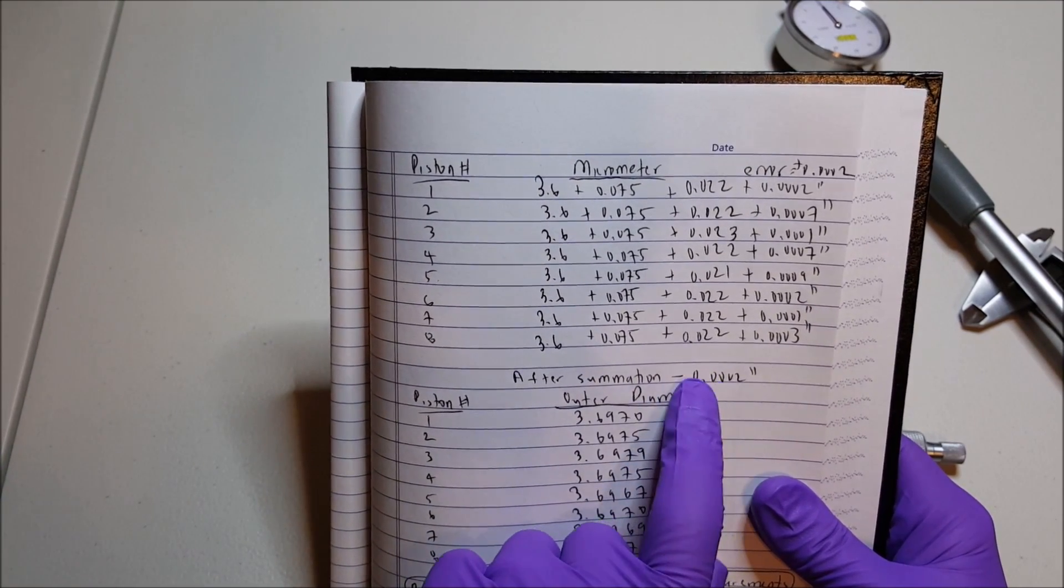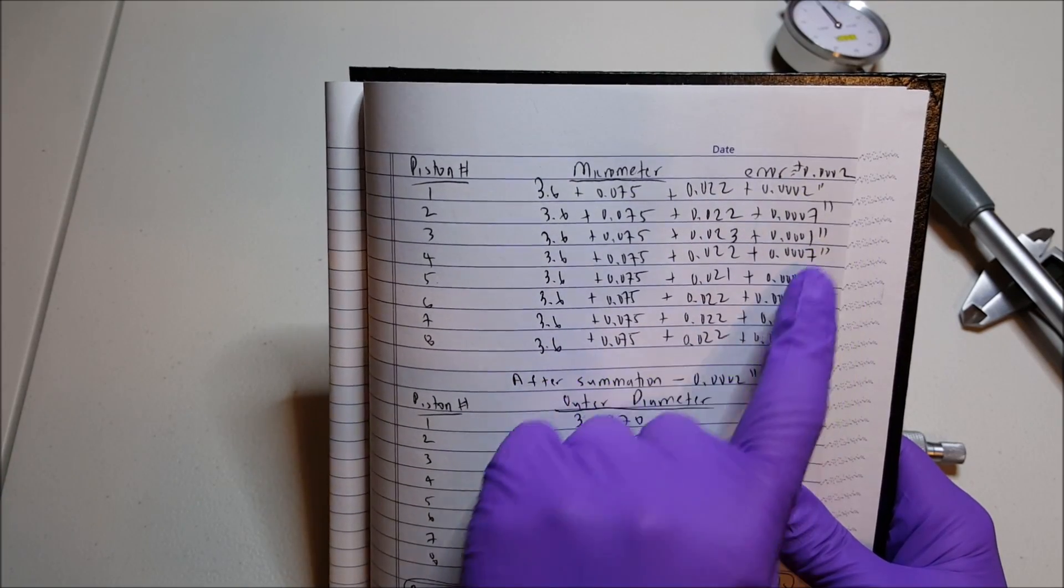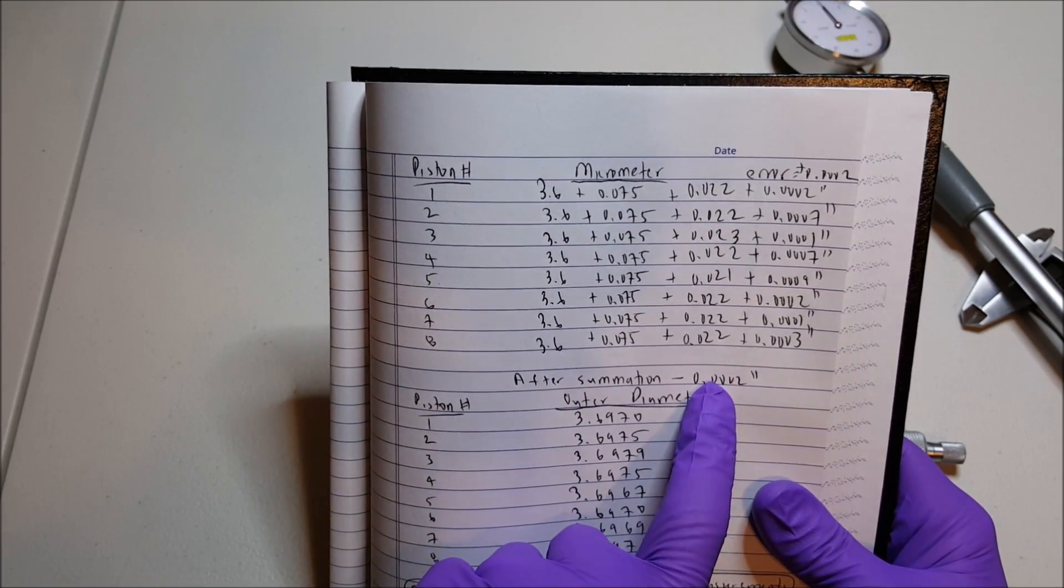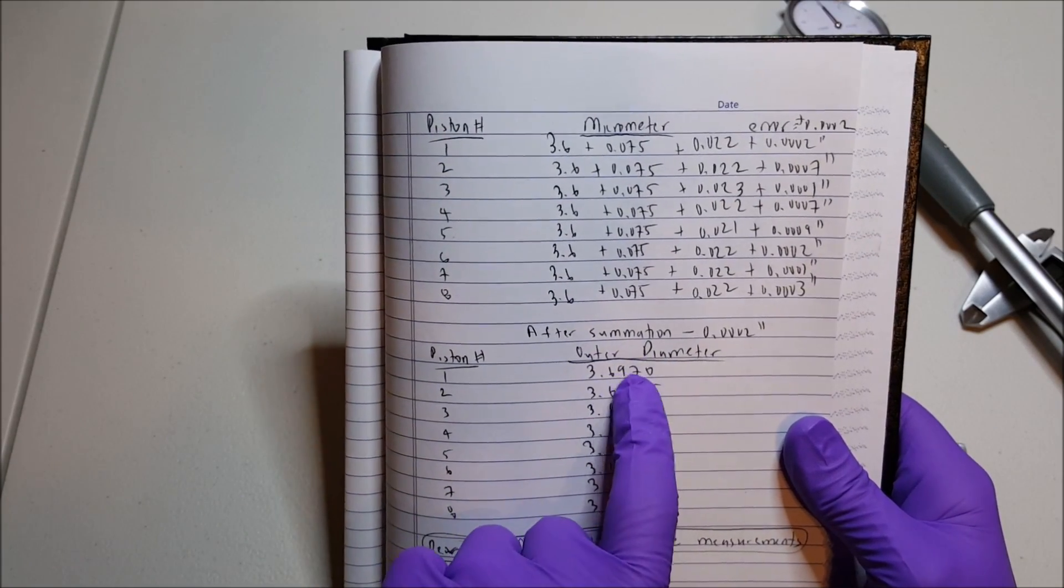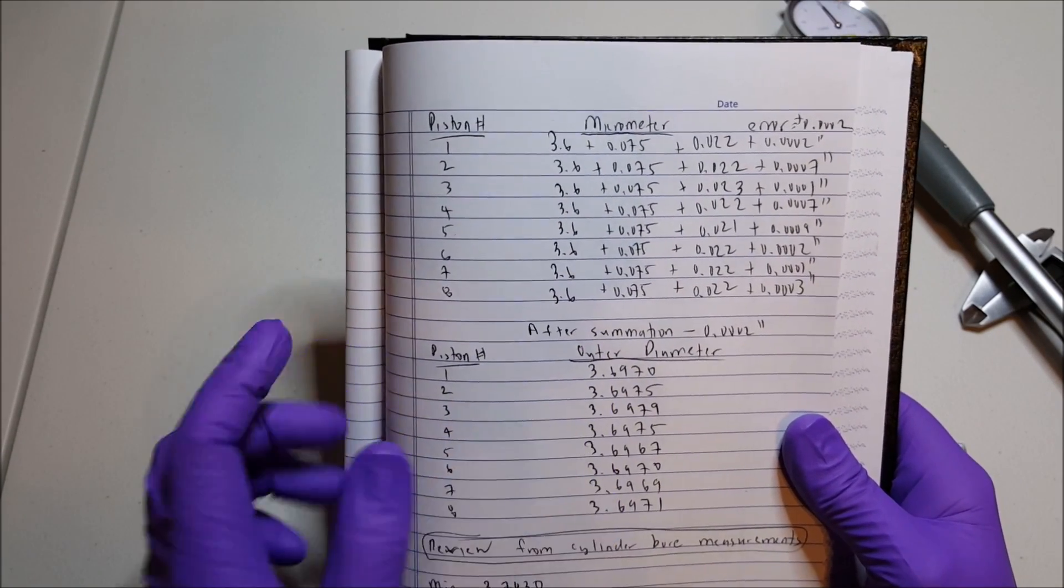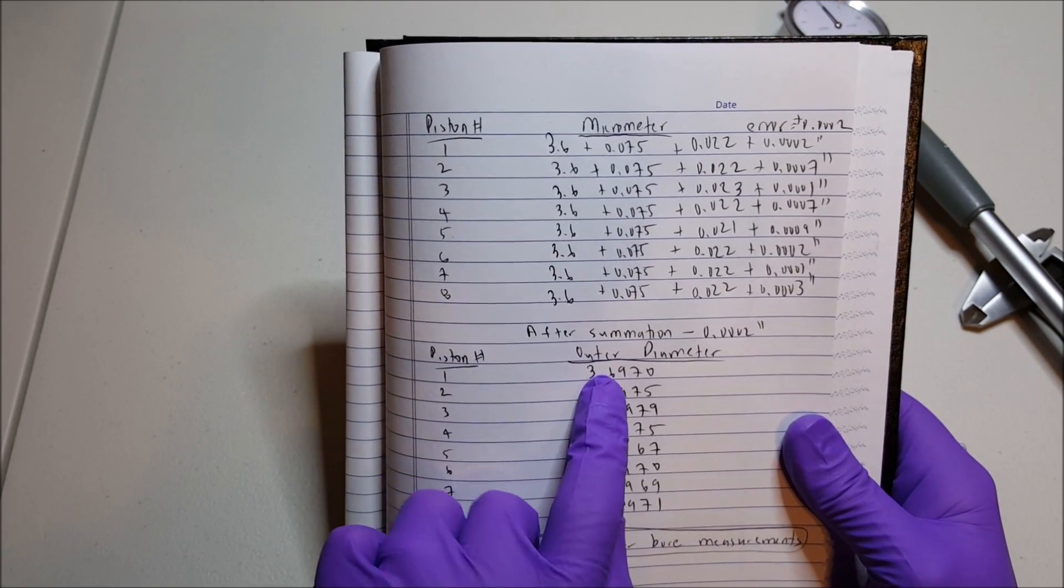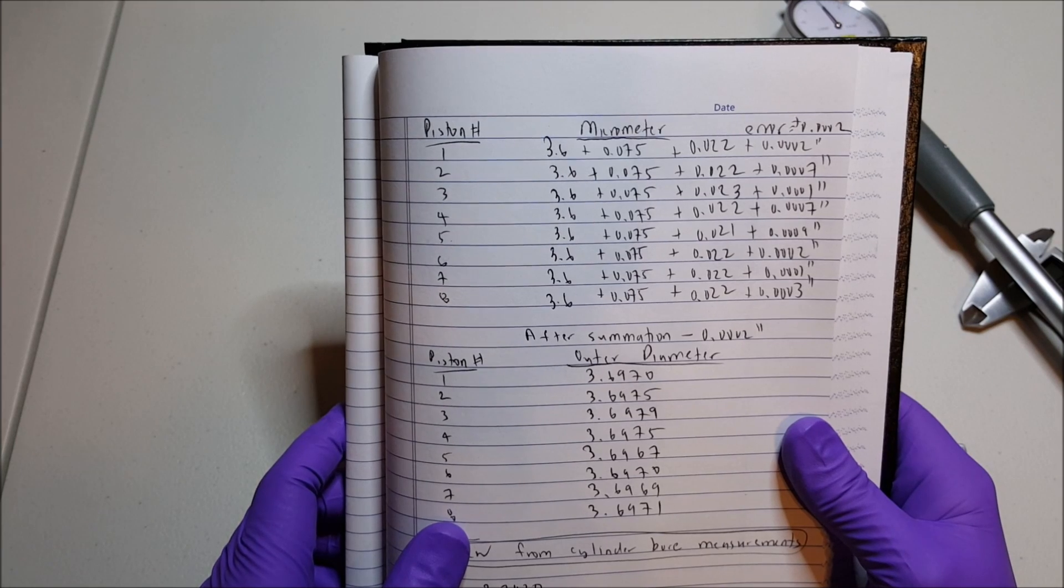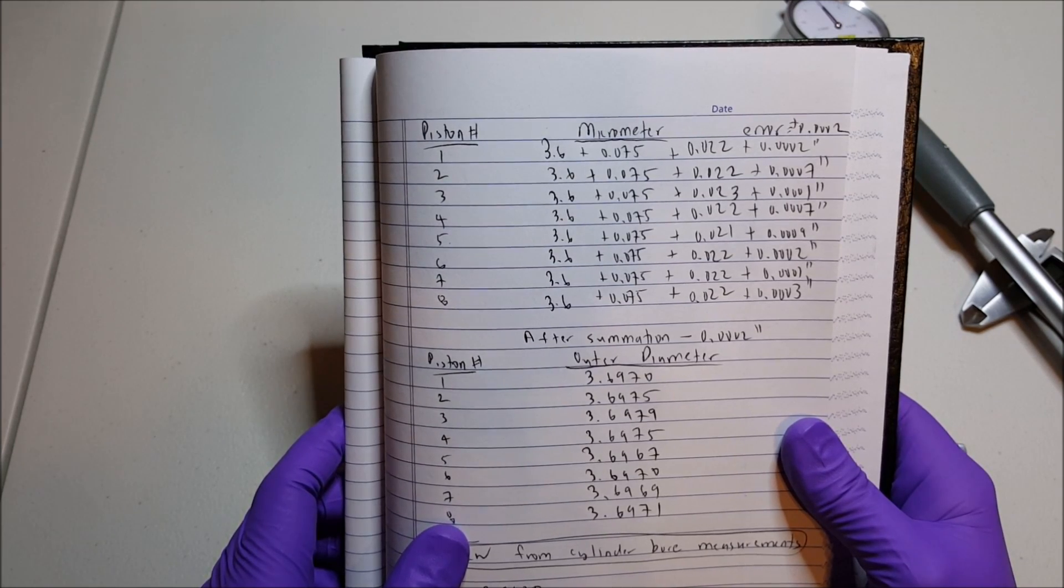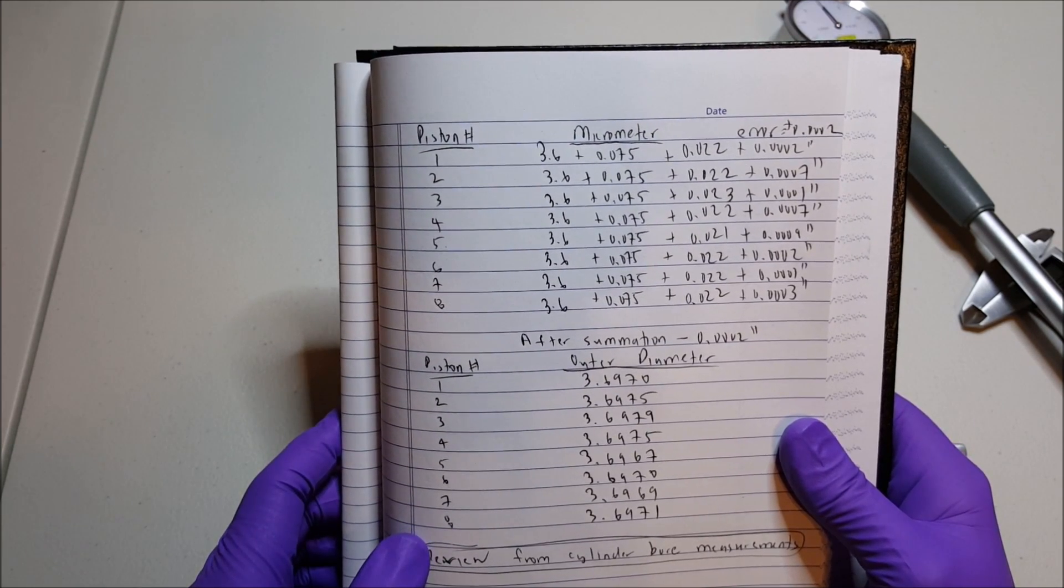After summation, I'm summing all these and getting a measurement, and I'm subtracting off the 2 ten thousandths here. You're getting a final outer diameter of your pistons. As you can see, 3.6970, 3.6975, 3.6979. So they're very close to one another.